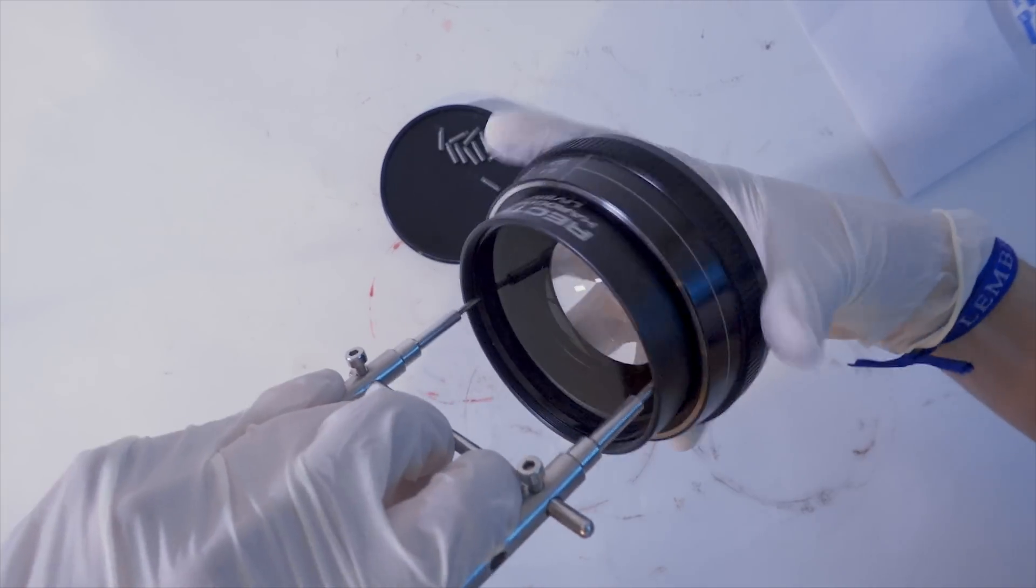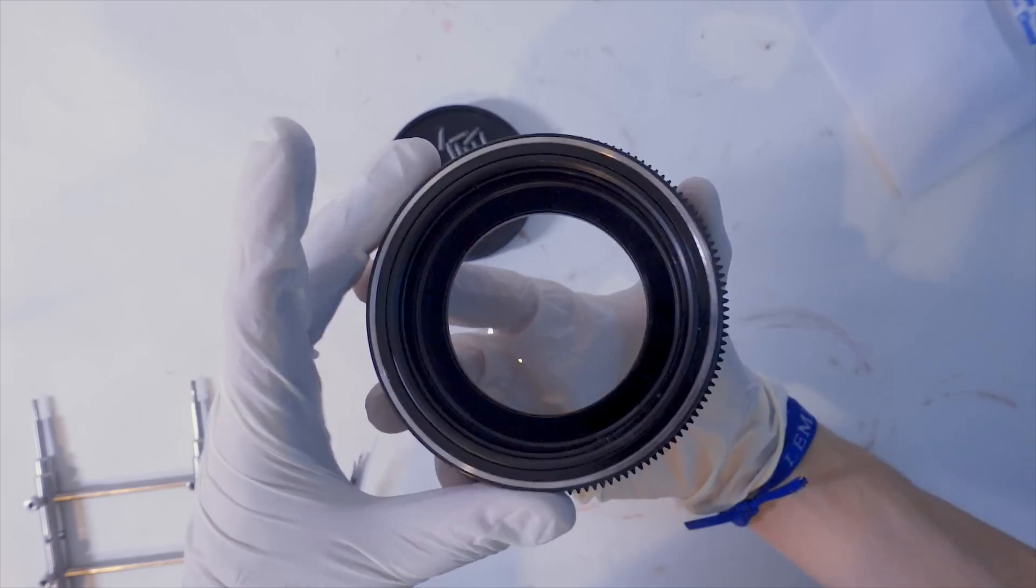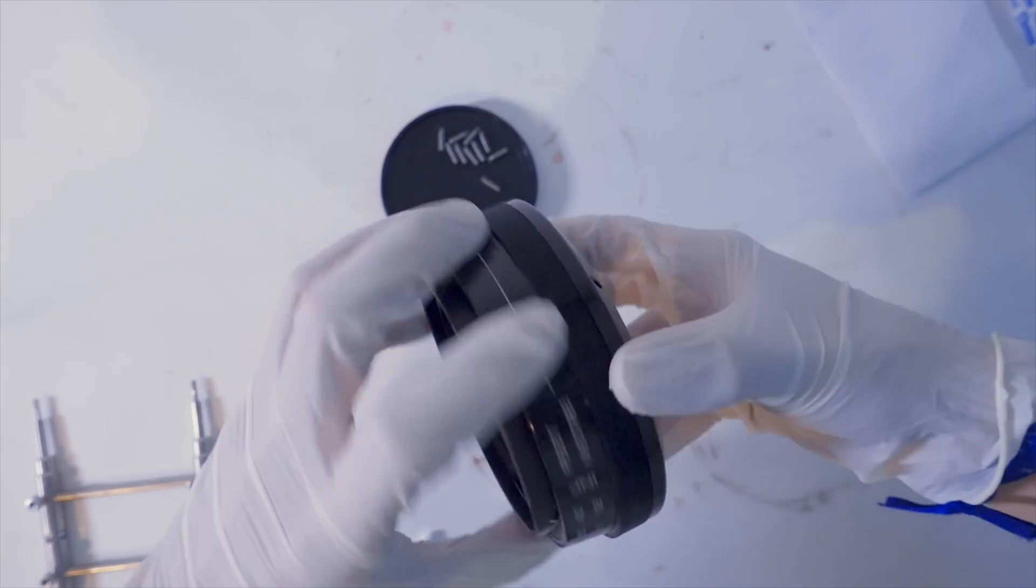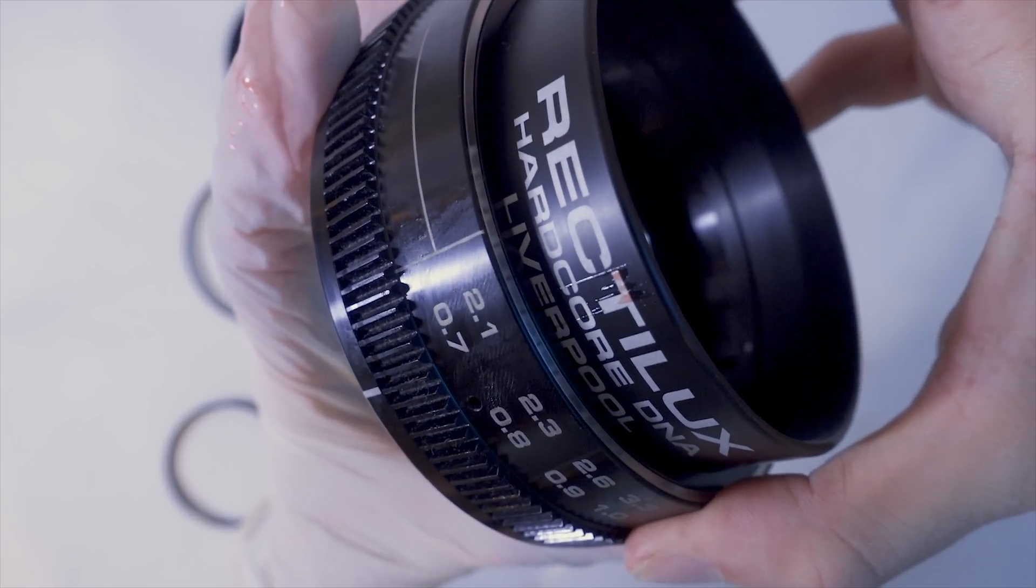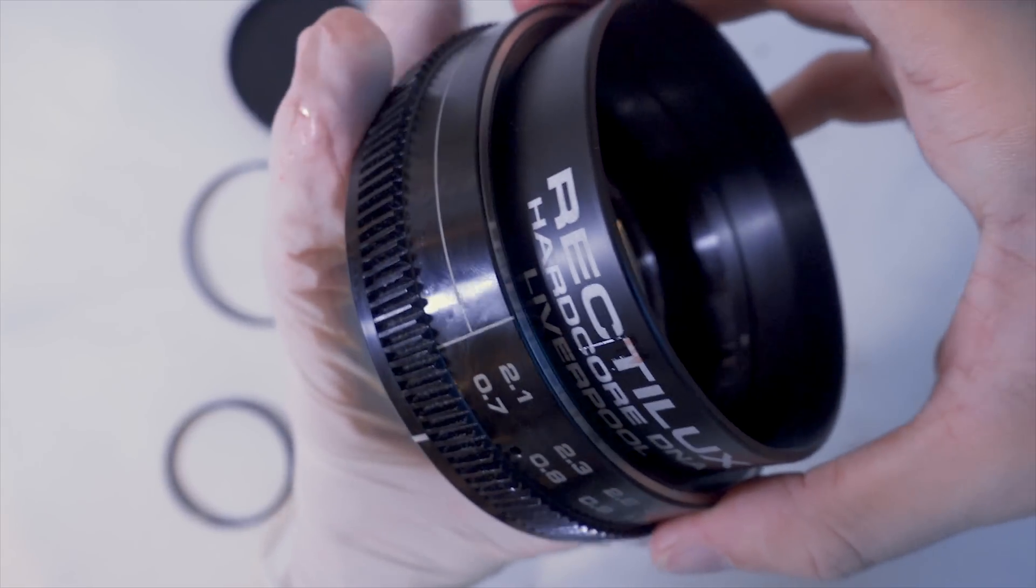Once the front glass is locked into place, do some repeated full focus turns to spread out the grease better. Some of it's going to come out on the ring with the Rectilux written on it, so you might want to clean that off.